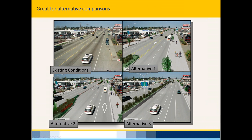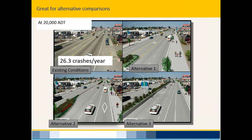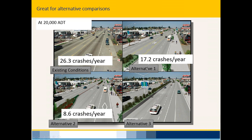The HSM is great for alternative comparisons. You can evaluate several different cross sections with the same ADT and expect different predicted crash frequencies. The highway safety manual helps you in that decision-making process. Mike Vaughan will talk more about this later.